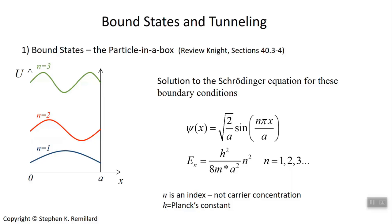That's the solution worked out when the problem is done — I'm not going to derive it here, just give it as the result. The wave function of an electron confined between zero and a has indices n equals 1, 2, 3, and so on. There are modes going up to n equals infinity describing states the electron can occupy, each with a successively higher energy level E sub n, which goes as the square of the index.